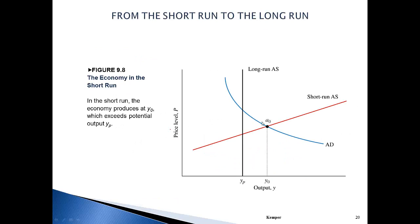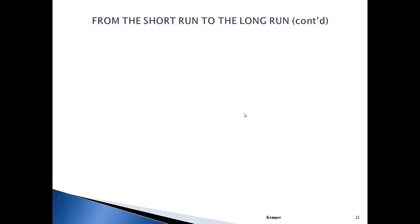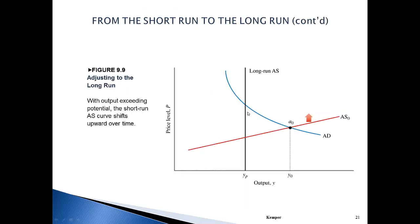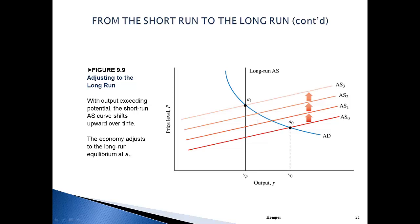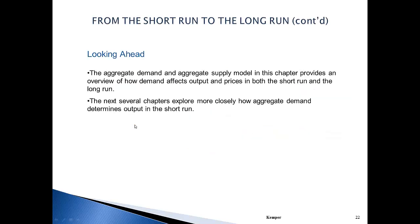Going from the short run to the long run — eventually we'll get to a point where we hit the long run, and at that point prices will finally adjust. The idea behind Keynes' philosophy is that if we see an increase in either aggregate demand or aggregate supply without prices adjusting, we'll have some wealth creation. The next several chapters, we're going to look more closely at this as well as the supply side of the economy — that's the Republican view.